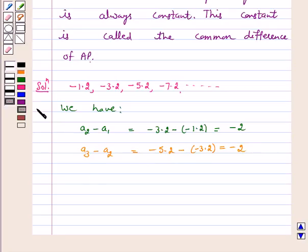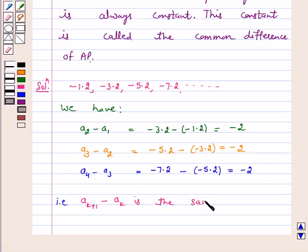Again, a₄ minus a₃ is equal to minus 7.2 minus minus 5.2, which is again equal to minus 2. That is, aₖ₊₁ minus aₖ is the same every time, it is constant.